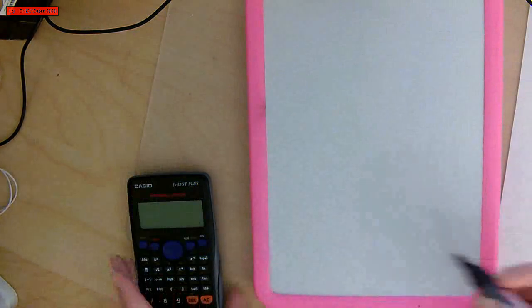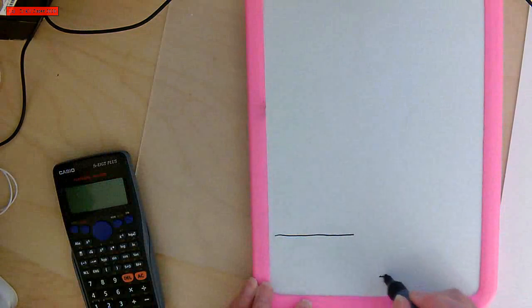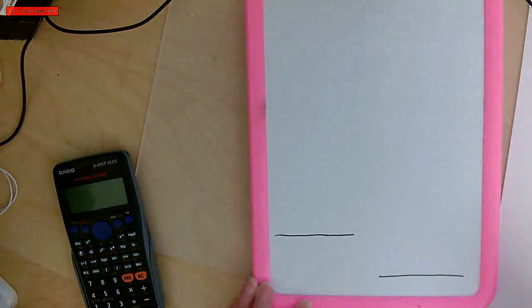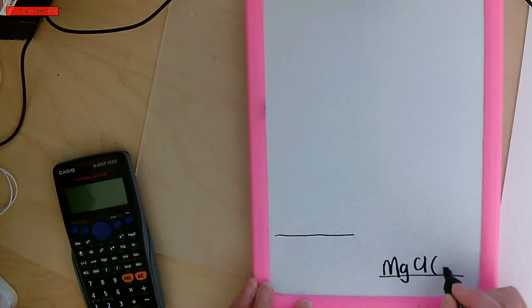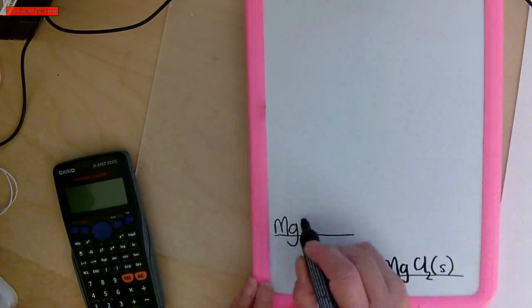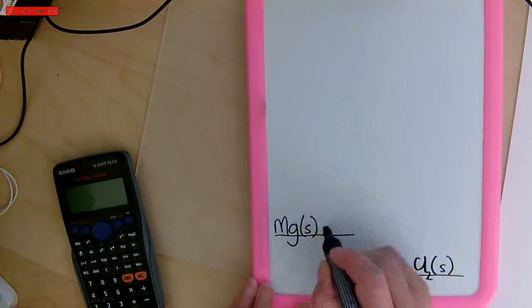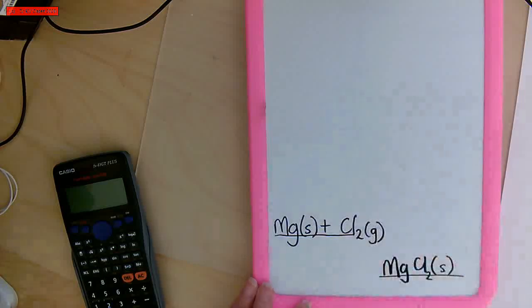I'm going to go through the Born-Haber cycle for magnesium chloride. Let's start by drawing the starting materials and the product. We're making magnesium chloride, MgCl₂, which is a solid, and we're going to be making that from magnesium element, which is a solid, and chlorine, which is a gas.